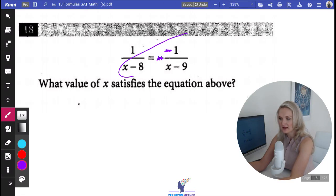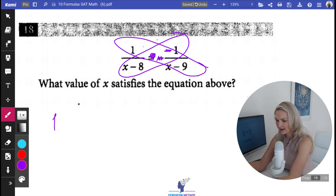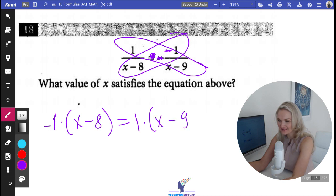Now I'm cross multiplying, cross multiplying, turning this into a multiplication. I'm going to have negative one times x minus eight is equal to one times x minus nine.